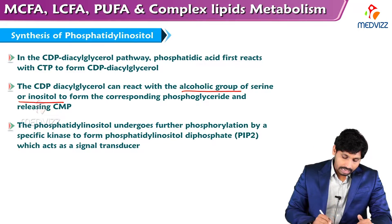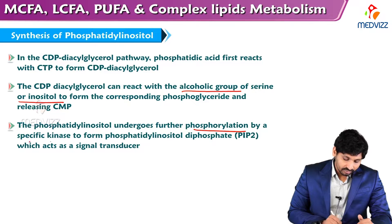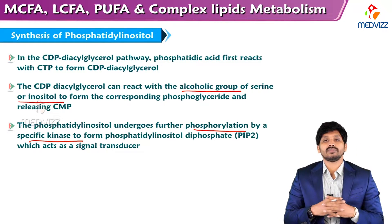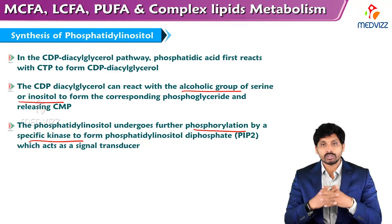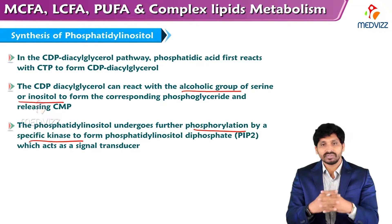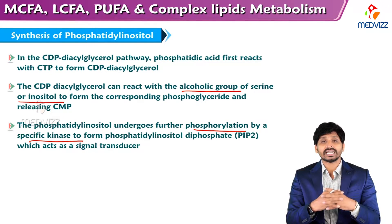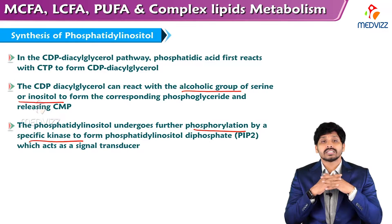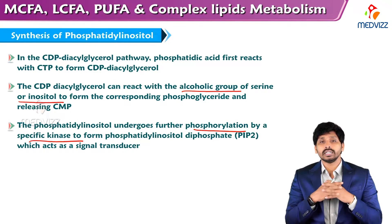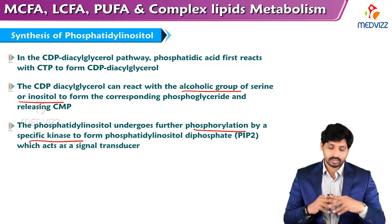Phosphatidylinositol undergoes further phosphorylation by a specific kinase to form phosphatidylinositol diphosphate, PIP2. Two phosphate groups are present, and PIP2 acts as a signal transducer or second messenger inside the cells.